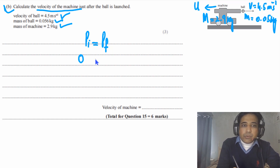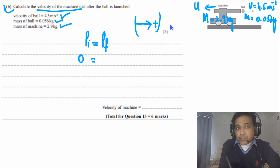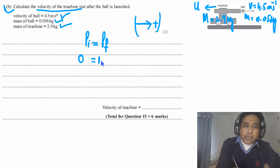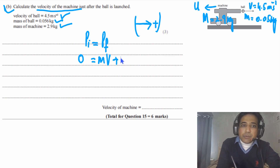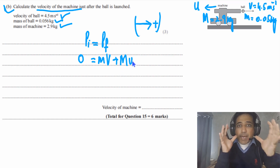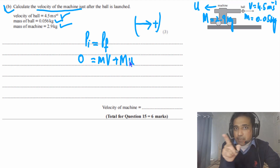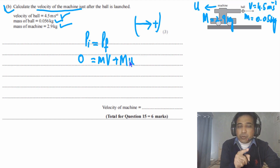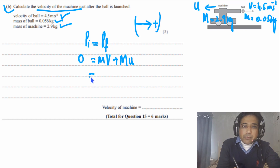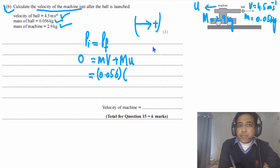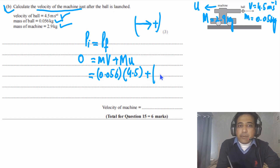We write: initial momentum = final momentum, and initial momentum = 0. Taking rightward as positive, the ball's momentum is +mV = positive. We write 0 = mV + Mu, where u is the machine's velocity (sign unknown). If we get a positive value of u, it moves right; if negative, it moves in the opposite direction to the ball. So: 0 = (0.056)(4.5) + (2.9)u.